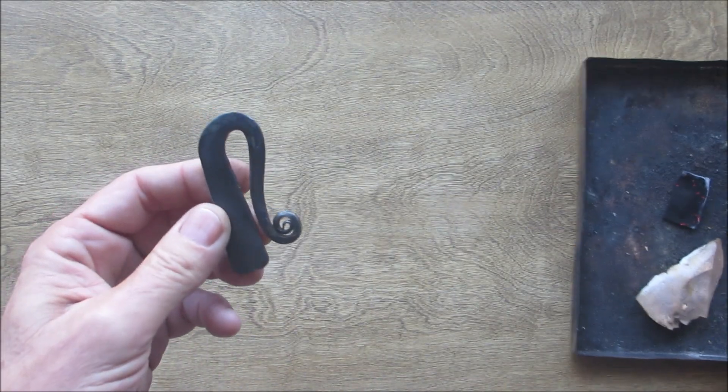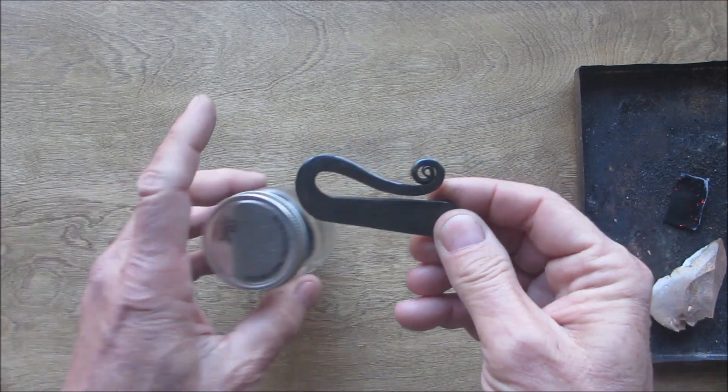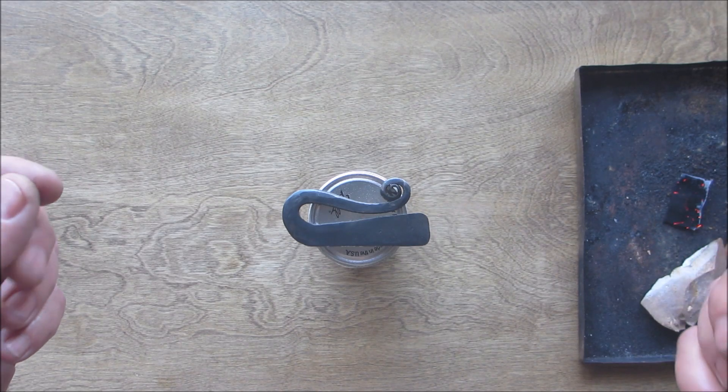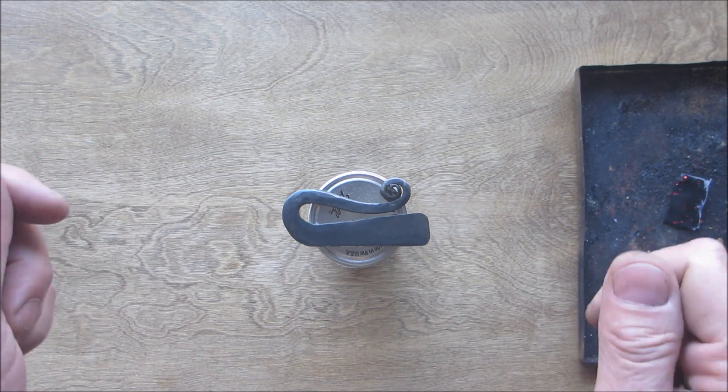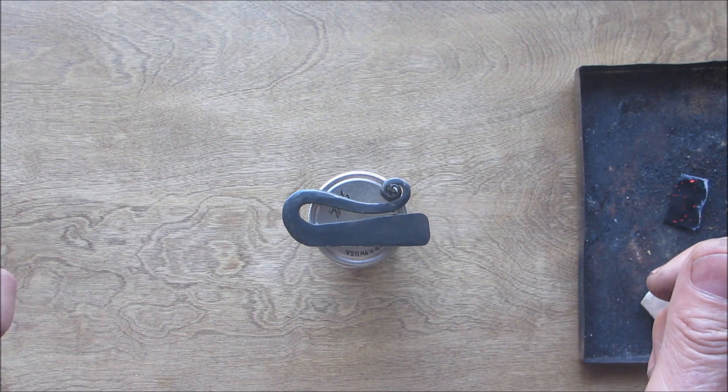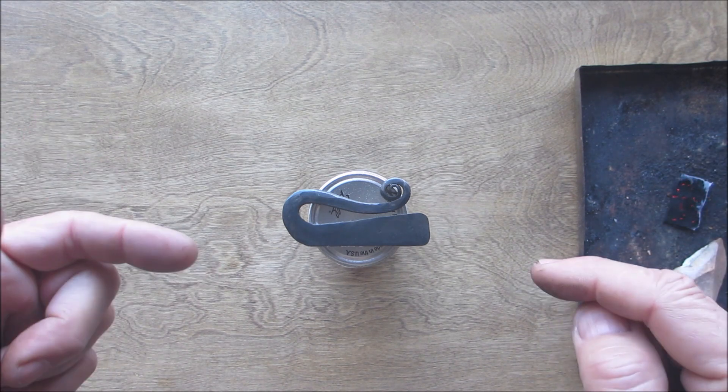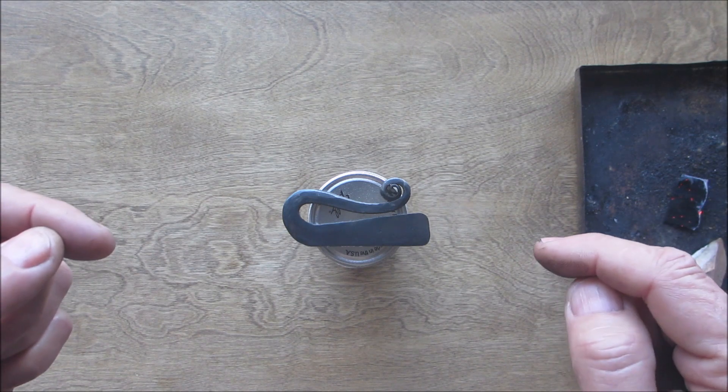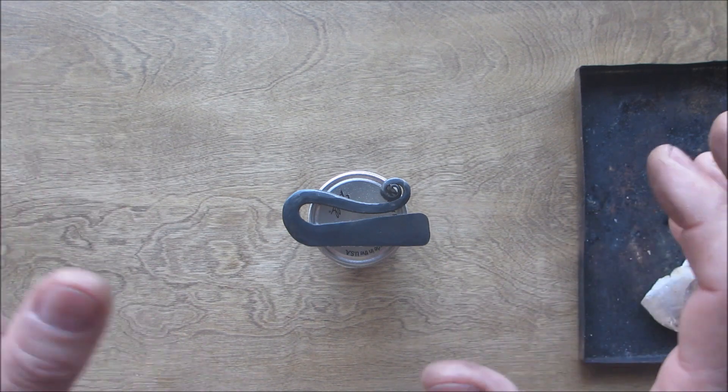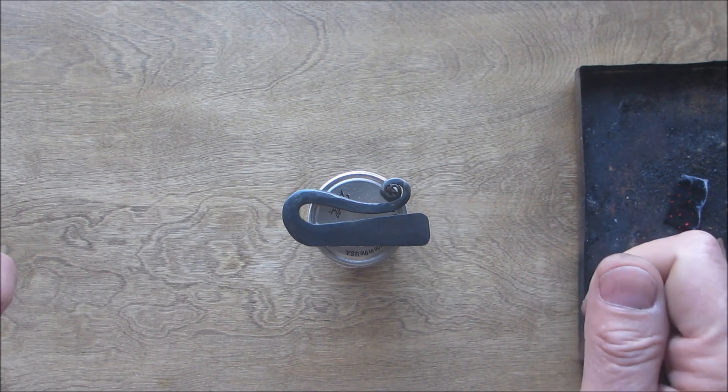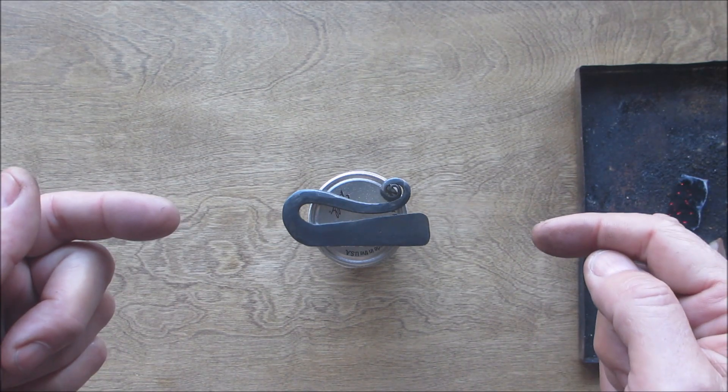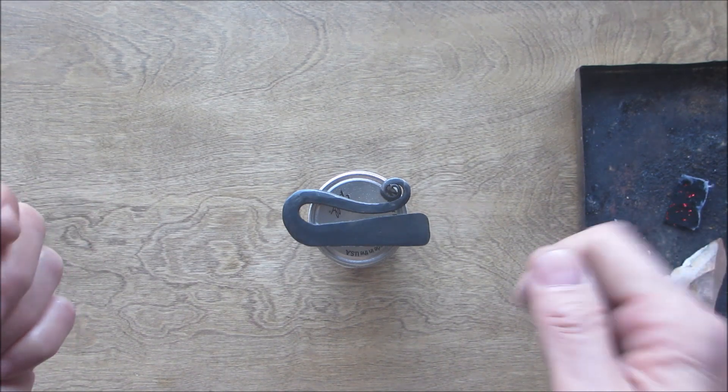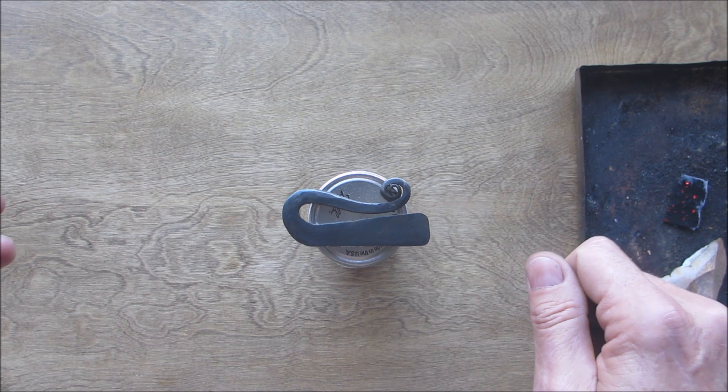So there it is, my latest hand forged flint striker. Like I said, I'll put a link in the description of the earlier videos of me forging them in case anyone's interested. This took me about two hours to forge, clean up, heat treat, the whole bit. I would guess an experienced blacksmith could probably knock this out within a half an hour, but again, like I said, rudimentary tools and still practicing on this.